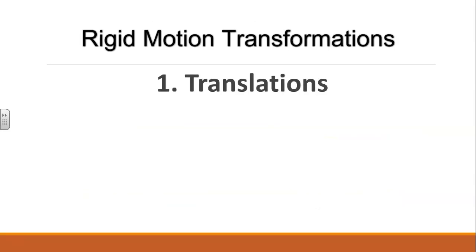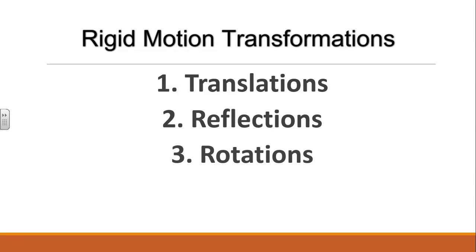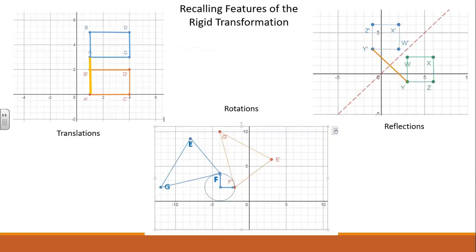The rigid motion transformations consist of translations, reflections, and rotations. Let's take a moment and recall the features of these rigid transformations.